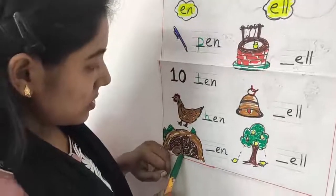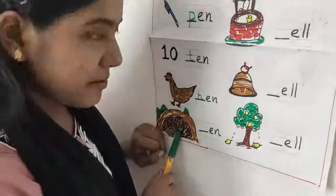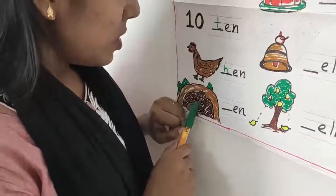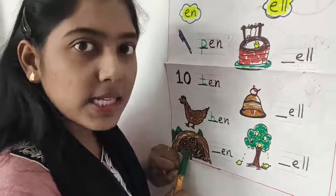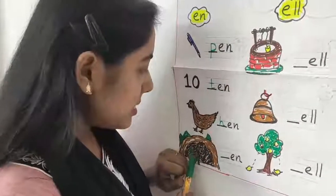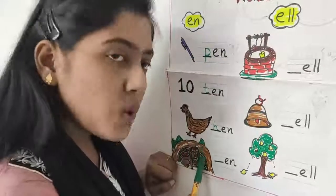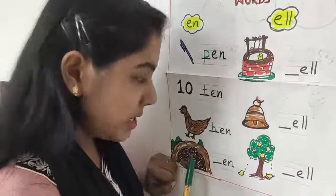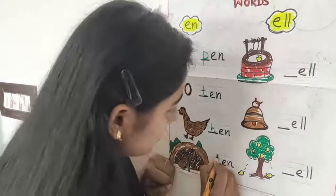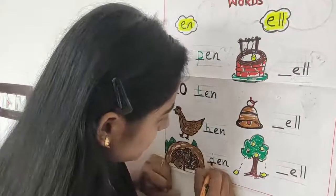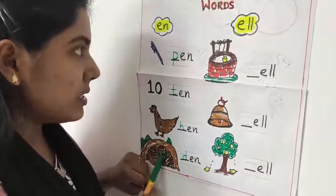See this. This is a lion. Have you seen a lion? Where is he sitting? In a den. He is sitting in a den. This is called den — it is a cave, and the lion is sitting inside the cave. The cave is called den. D for den.